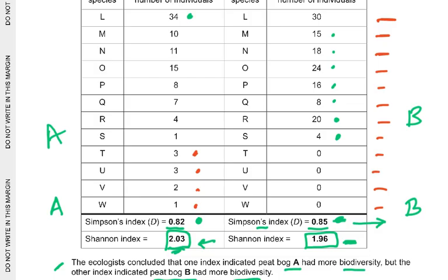Peat bog A has a higher number of species, and peat bog B has a smaller range of species abundance — most of them are zero for species T, U, V, W and others. Peat bog A had 34 for species L versus 30 in B. So peat bog A: higher number of species; peat bog B: smaller range of species abundance.